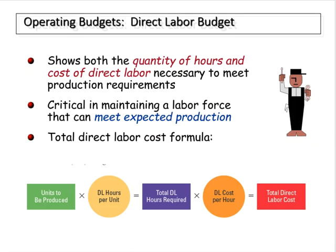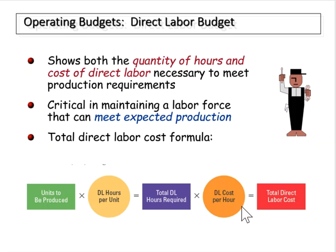Let's take a look at how we go about preparing a direct labor budget. We start by multiplying the number of units to be produced, as calculated in the production budget, by the direct labor hours needed per unit to find the total direct labor hours needed for the month. Then we multiply the direct labor hours needed for the month by the cost per hour to find the total direct labor cost needed to meet production.